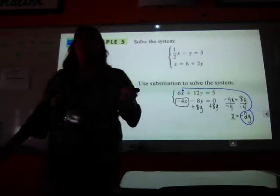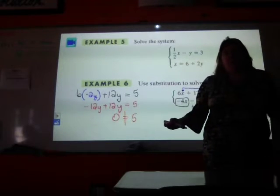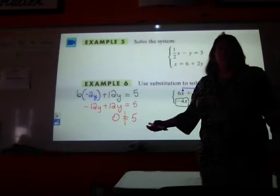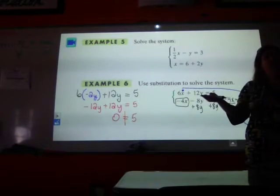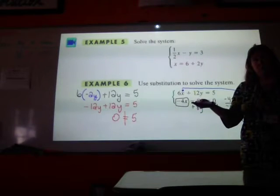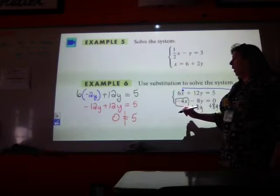Now, does 0 equal 5? No. If I have 0 and you have 5, we do not have the same amount. Or if it said 4 is equal to 5. If I've got 4 and you've got 5, we do not have the same amount. So if they're not equal to each other, we're going to say what?